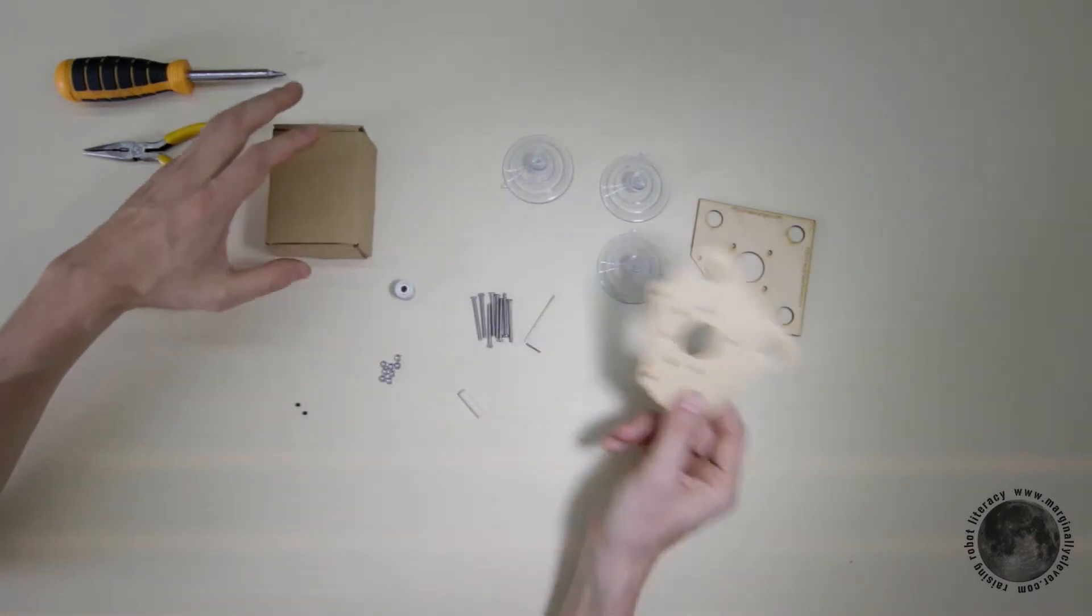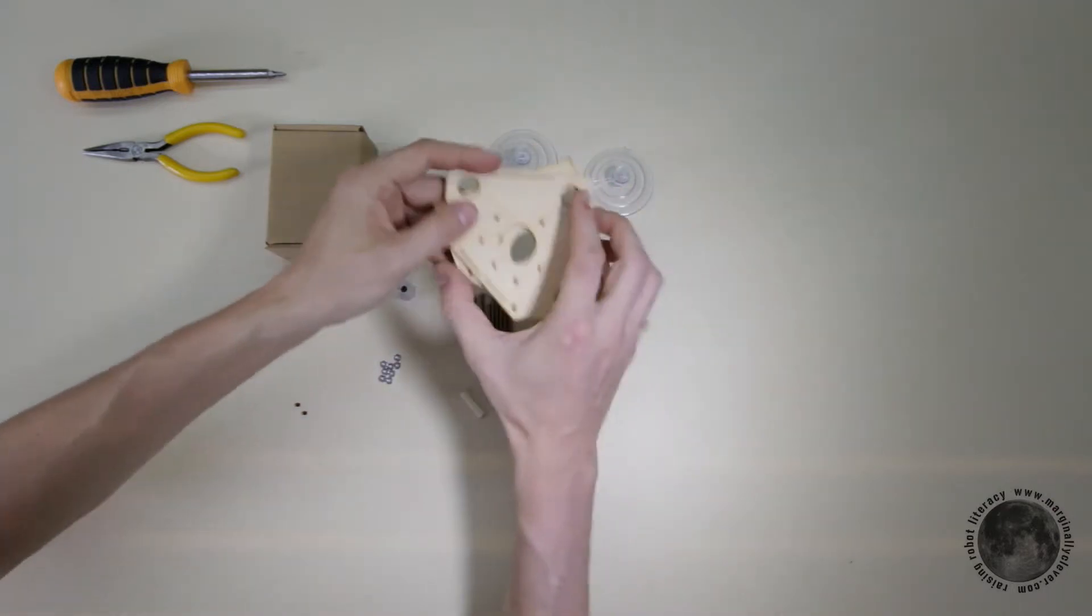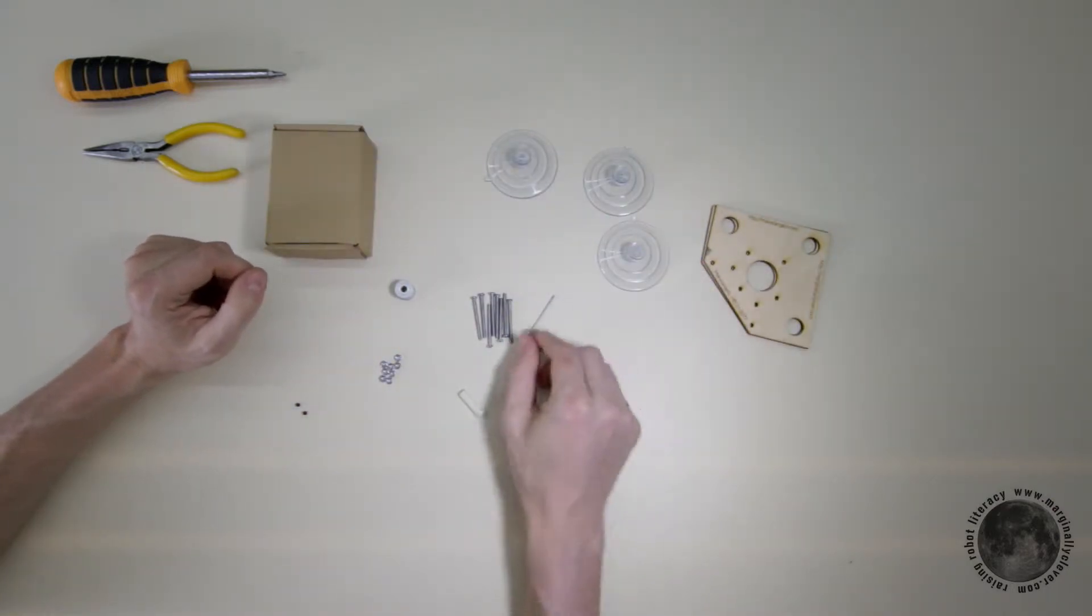So first of all, let's check our inventory. We should have two boards like this, we should have three suction cups,